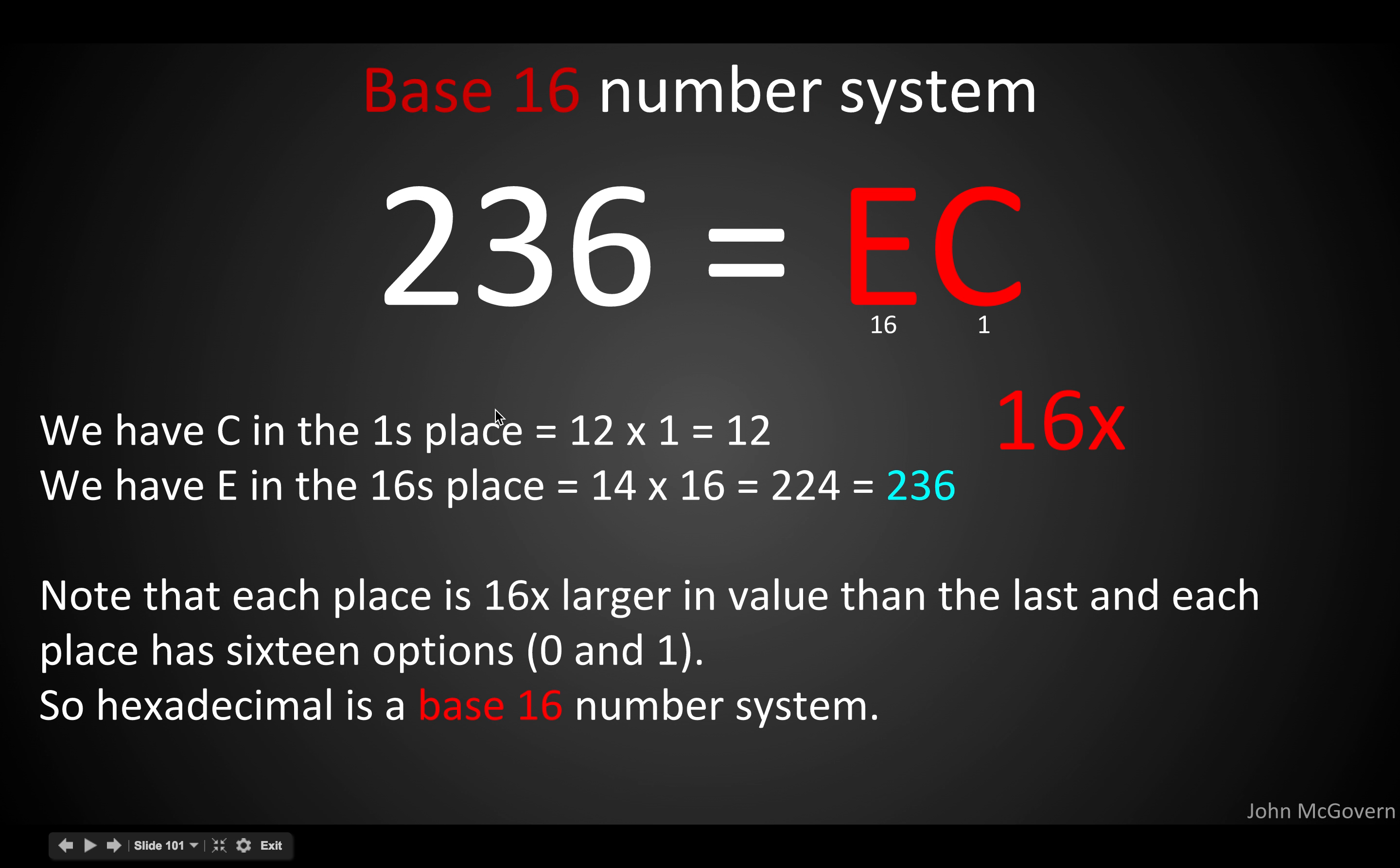So, back here, we have a C in the 1s place. And we said C is our stand-in for 12. So, 12 1s. And E is our stand-in for 14. So, 14 16s, 224. So, there's our math. Same rules apply. Each place has a value that is 16 times larger. So, binary is 2 times as large. Decimal is 10 times. 1, 10, 100, 1,000. Here, it's 16 times larger every time. So, 1, 16, 256, and so on and so forth. And also, there are 16 possibilities for values in each place. So, hexadecimal is a base 16 numbering system.